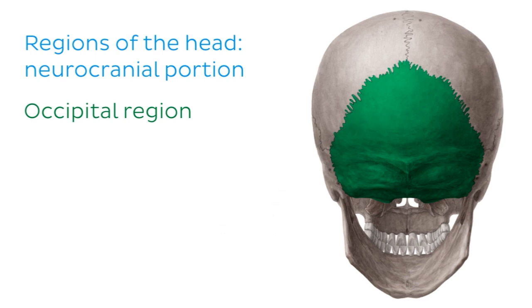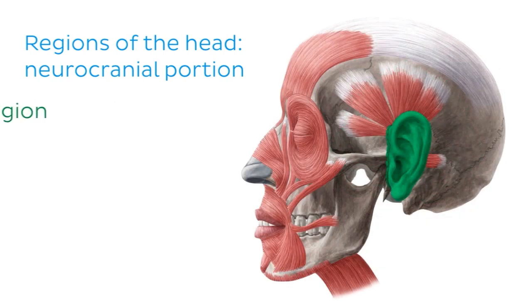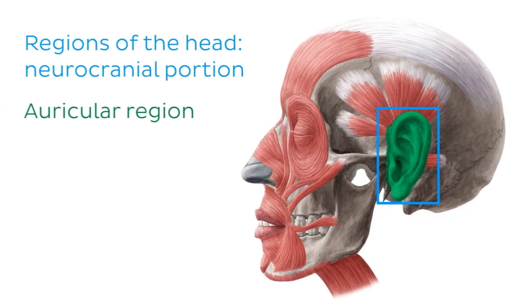Note that the frontal and occipital regions of the head overlie unpaired bones of the skull, in contrast to the temporal and parietal regions which overlie paired bones. Next we have the auricular region, which is the only region in the neurocranial portion not named after the bone or bones it overlies. Instead, it refers to the region around the ears, including the external ear — composed of the auricle or pinna — and the external acoustic meatus or canal.